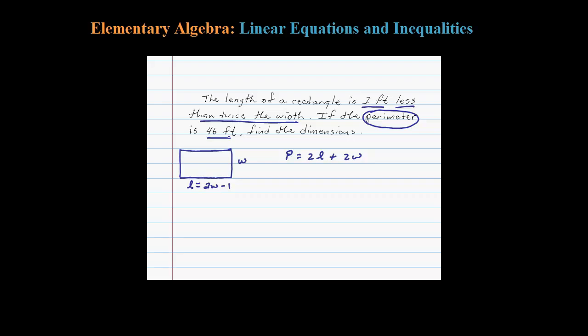He told us the perimeter was 46 feet, so I'll go ahead and substitute that in there for P. Now the length is actually in terms of W, so we have 2W minus 1, and I'll substitute that there.